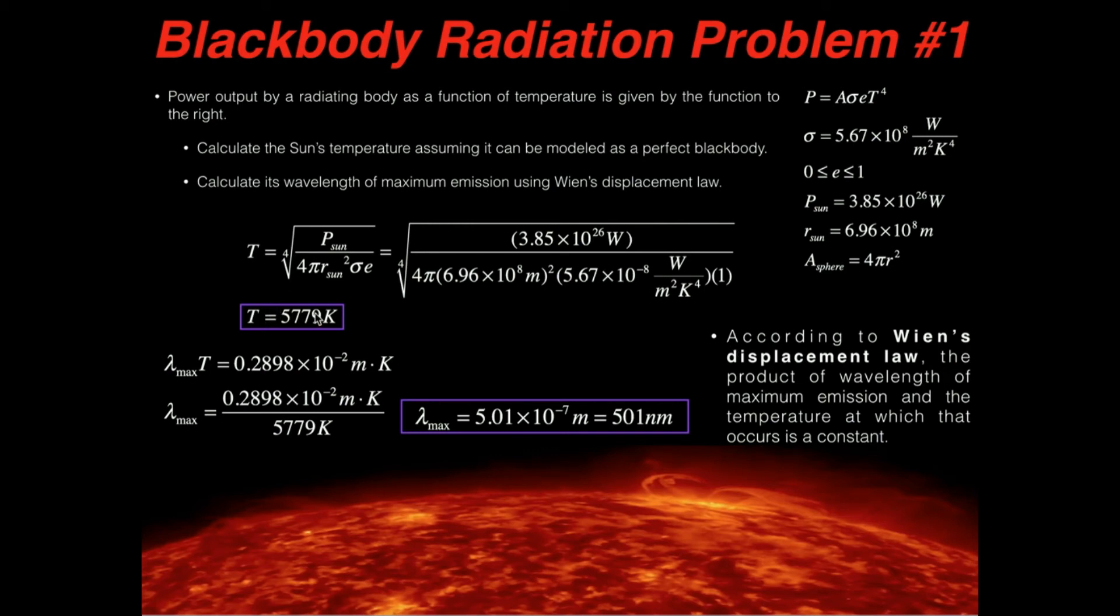All right, so let's use this number and the formula, but we're solving for the emission maximum. We need to divide through by temperature. So the emission maximum is equal to this constant, 0.2898 times 10 to the minus second meter Kelvin, and then we divide through by T, so divide by the temperature we just found, 5,779 Kelvin. And it turns out that our lambda max, our maximum emission wavelength, is 5.01 times 10 to the minus seventh meters. And if you multiply by 10 to the ninth as a conversion factor, this is about 501 nanometers.